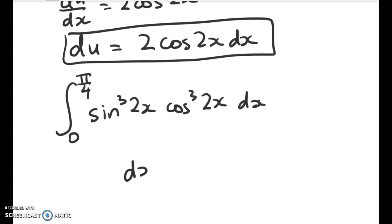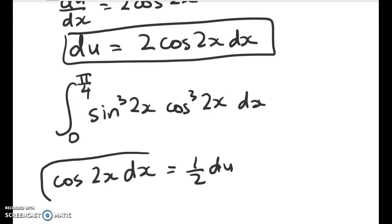We could write dx as, or we could write cos of 2x dx is equal to 1 half du. And then we can substitute in, get rid of this in here, and replace it with this. This bit is going to be easy to replace with u.